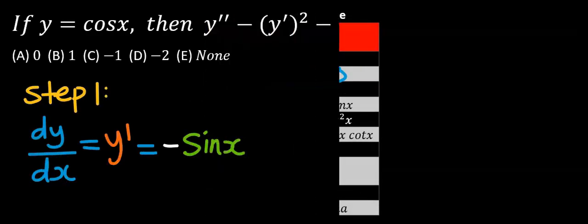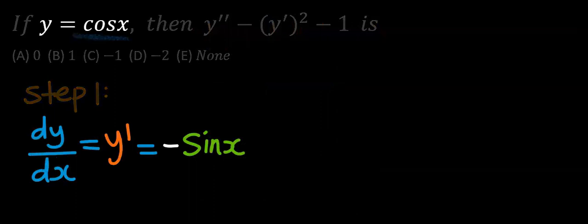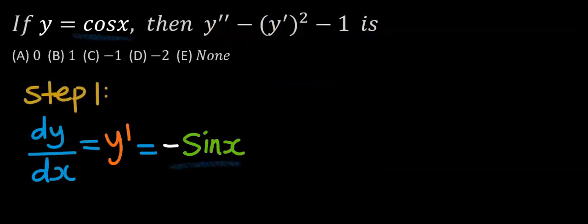From the basic derivative table, when you differentiate cos x, you are going to have minus sine x. Hence, the differentiation of cos x will give you minus sine x. This is the first derivative.